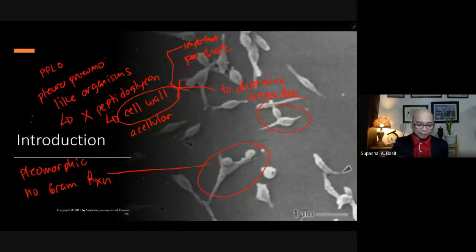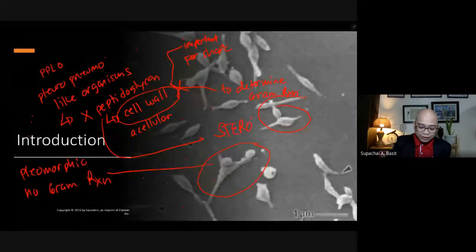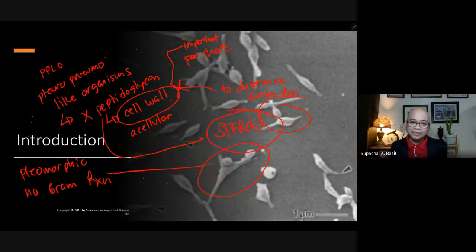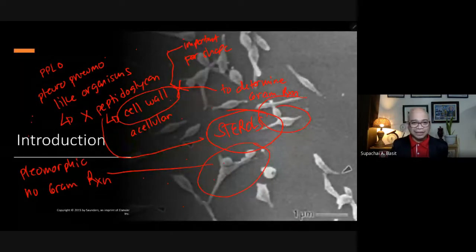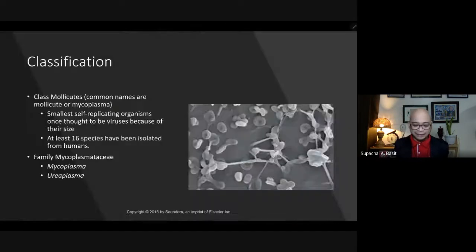Instead of peptidoglycan, they have sterols in their cell membrane. So sterols are what they have instead of peptidoglycan, and that is the reason why they look the way they do under the electron microscope.